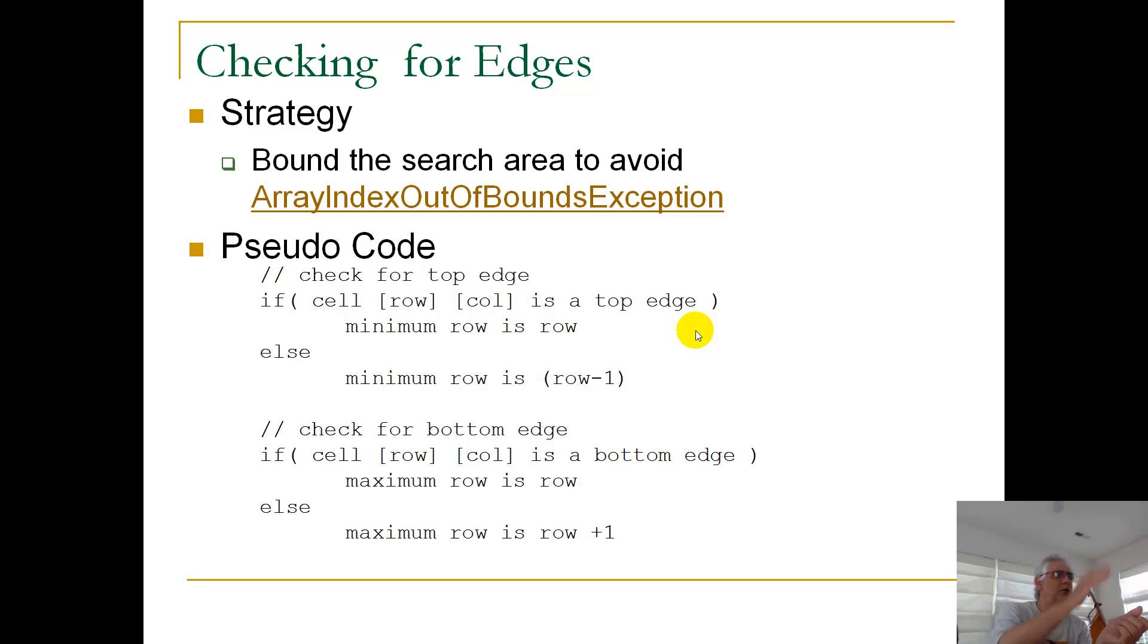So I've got two cases here, some pseudocode where we're checking for the top and the bottom. Checking for the left and the right is really not much different at all, but in this case we're going to look at top and bottom. So let's begin, we'll look at our check for the top edge.